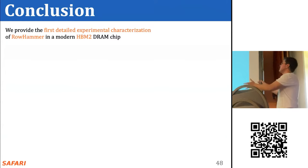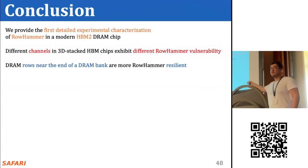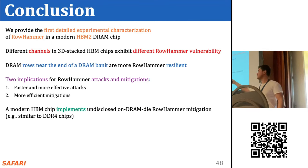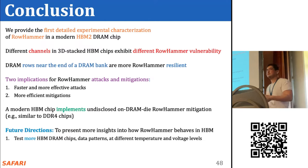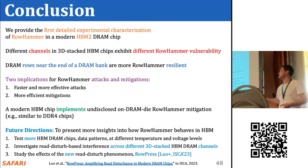To conclude: we provide the first detailed experimental characterization of rowhammer in a modern HBM2 DRAM chip. We find that different channels exhibit different rowhammer vulnerability and that DRAM rows near the end of a bank are more rowhammer-resilient. These findings can be leveraged to develop both more powerful attacks and more efficient mitigations. We identify an on-die mitigation mechanism in at least one modern HBM2 chip. Future work will test more DRAM chips with more data patterns at different temperatures and voltages, investigate read-disturb effects across 3D-stacked HBM channels, and study the new RowPress phenomenon.